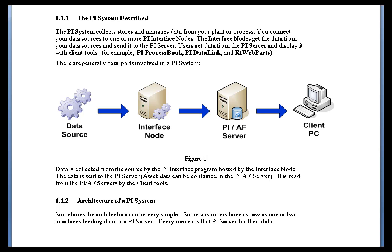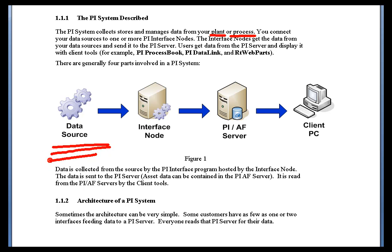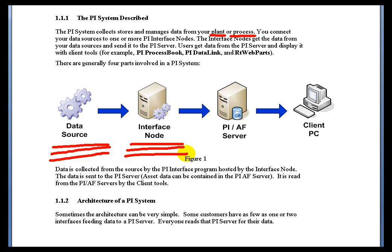The PI System is all about collecting data from a variety of sources in an intelligent way and making that data available to clients. As you can see in the illustration here, we typically talk about these data sources being things like control systems you'd find in a plant or a process environment, but nowadays the data source can really be a variety of things, even IT resources, like Windows performance metrics from some of our interfaces. The data sources are obviously the source of the data that we're going to end up storing and displaying to people. We typically have interface nodes that are involved in the collection of that data.